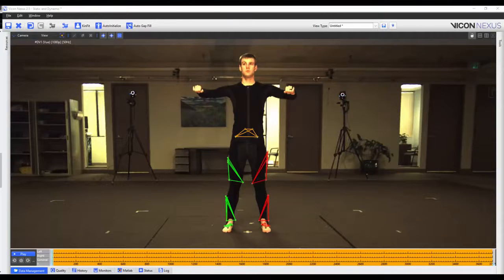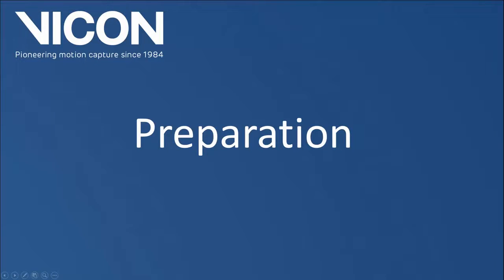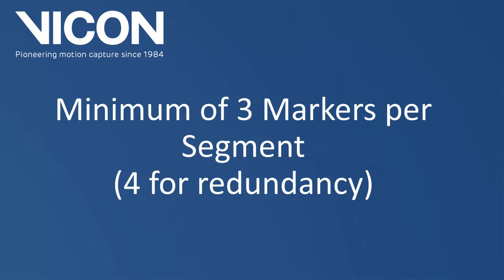Welcome to the Nexus 2 help guide. In this video, we're going to show you how to build a custom VST. The Nexus 2 Auto Labeler will work best if we follow two rules when we build our VST. The first is that we have a minimum of three markers per segment. In this video, I've actually got a minimum of four markers per segment, as this will allow me to take advantage of the rigid body gap filling.